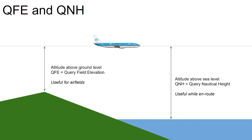QFE and QNH — you may have heard these terms. QFE means 'Query Field Elevation' — it's asking what the barometric pressure is in relation to the airfield. QNH is 'Query Nautical Height' — it means what is the barometric pressure so I can work out my altitude above sea level. So QFE is above the ground, QNH is above the sea.